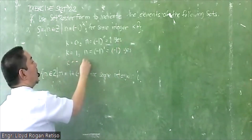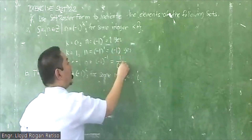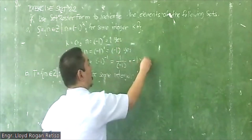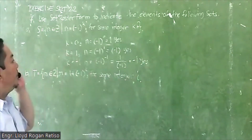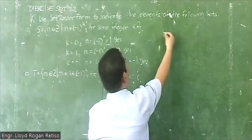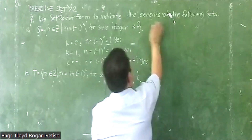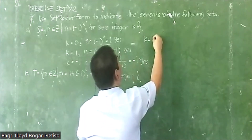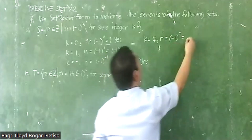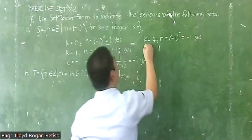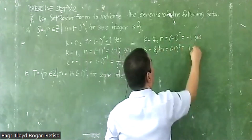If k equals negative 1, then n equals (-1)^(-1), which is negative 1, and yes that is an integer. Let's say k equals positive 7, then n equals (-1)^7, which is negative 1. If k equals 8, then n equals (-1)^8, which is 1.